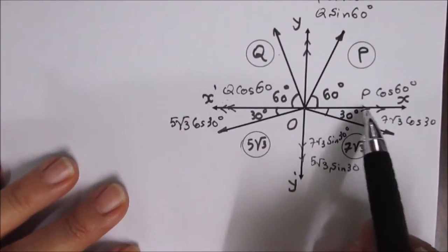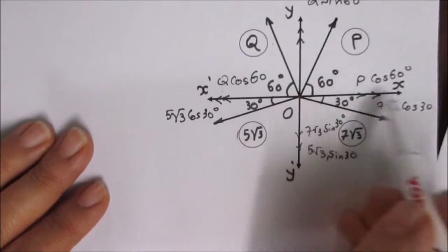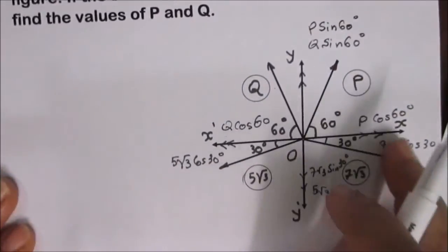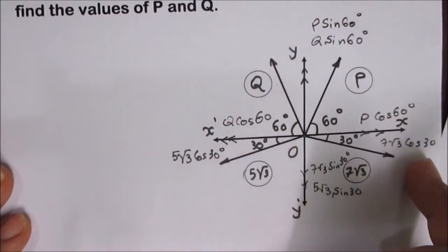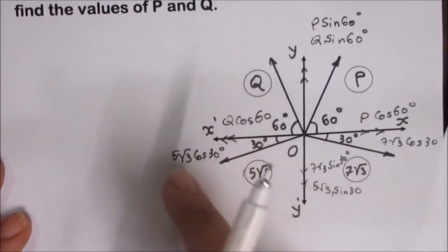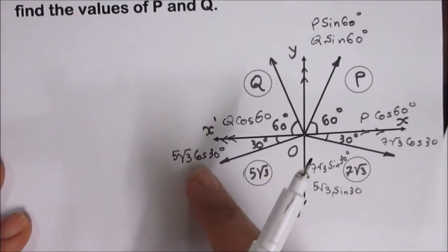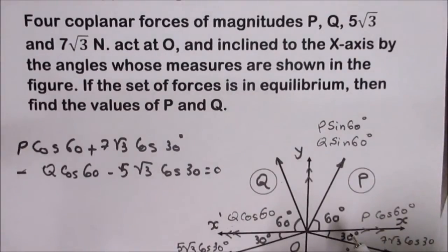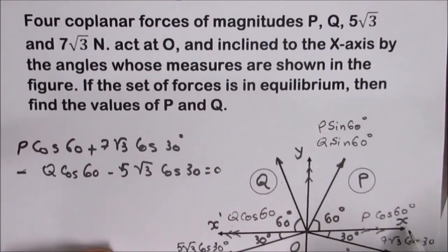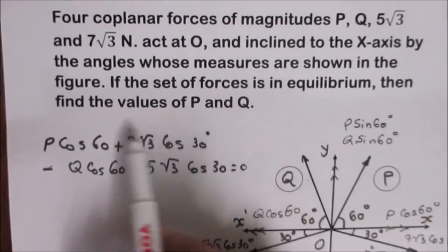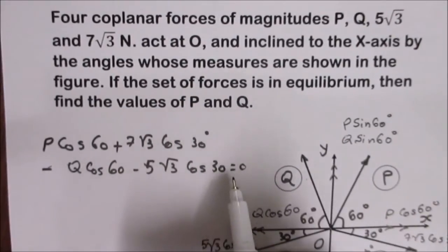Taking the algebraic sum of the components in the x direction: if the force goes right it's positive, if it goes left it's negative. So we have P cos60 + 7√3 cos30 − Q cos60 − 5√3 cos30. Since the set of forces are in equilibrium, the algebraic sum of the forces in the direction of x equals 0.